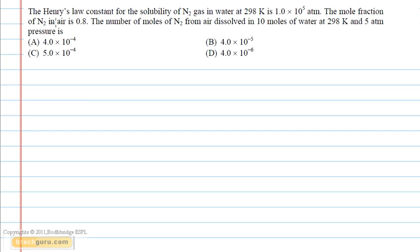In this problem, we have to find out the number of moles of nitrogen from air that are dissolved in 10 moles of water at 298 Kelvin and 5 atmospheric pressure. We have been given the Henry's law constant value for N2.